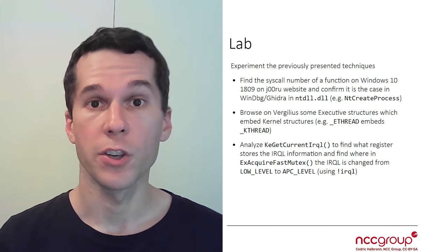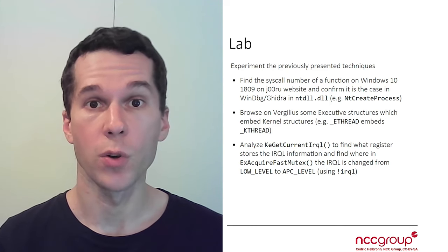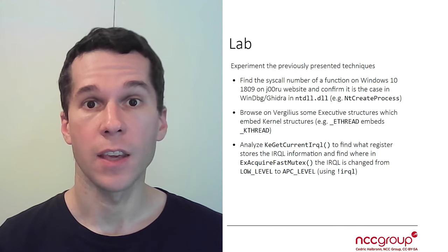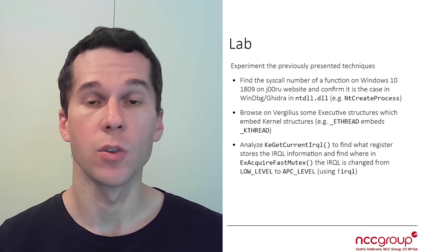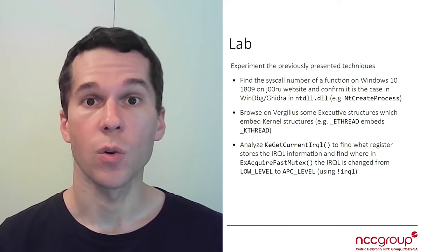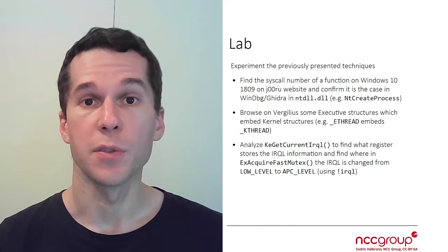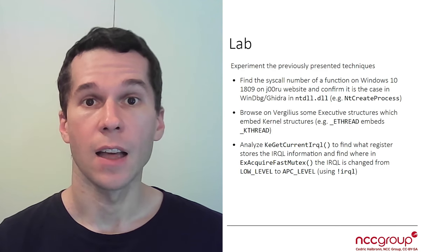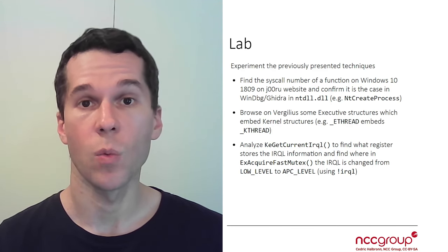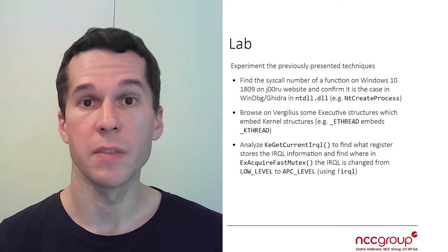Then you're going to have to go on the Vergilius project website and browse the e-thread structure, making sure you understand how the k-thread structure is embedded into the e-thread structure. Also in the k-thread structure, you'll try to find where there is a pointer to k-process, and then once you are in k-process you're going to have to see where it is used — more specifically, you're going to have to find the e-process structure.